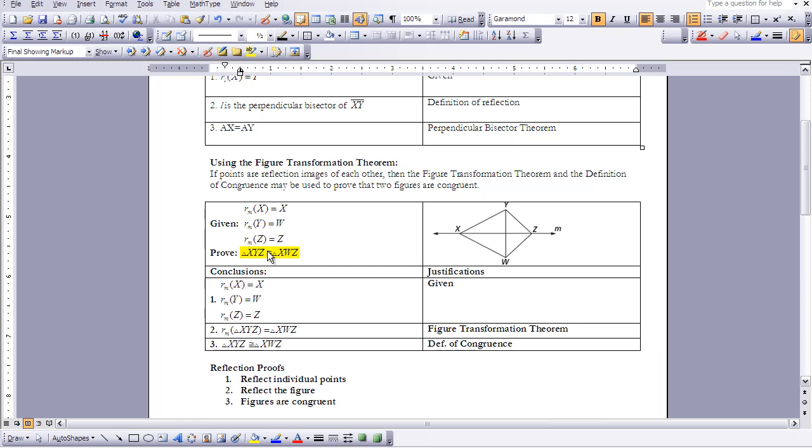My goal is to prove that the two triangles XYZ and XWZ are congruent to each other. That's my goal, that's what I'm trying to prove.